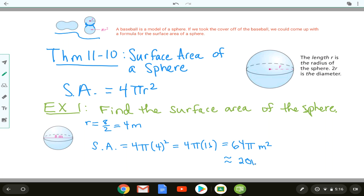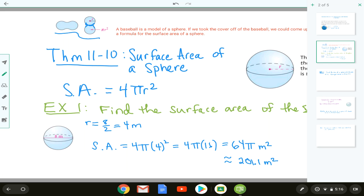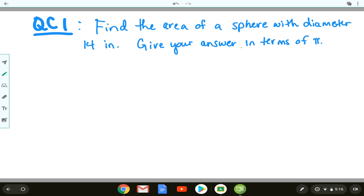Point one meter squared so pay attention to how they asked for the answer as well. Here's quick check one. I want you to pause and see if you can work this out and you're finding the area of a sphere with diameter 14 inches and I want you to give your answer in terms of π.